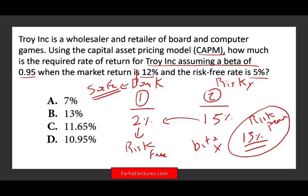For example, if the beta is 1, then 1 times 13% equals 13% — meaning this stock moves exactly with the market. You then add the risk-free rate: 13% plus 2% equals 15%. That's your CAPM. Now let me show you in this exercise how you will actually work it.